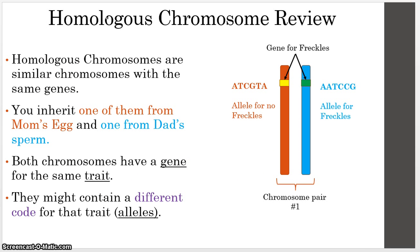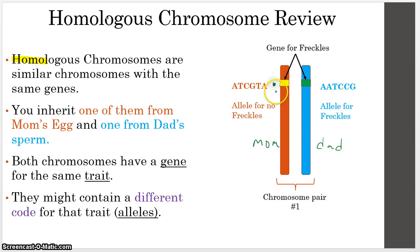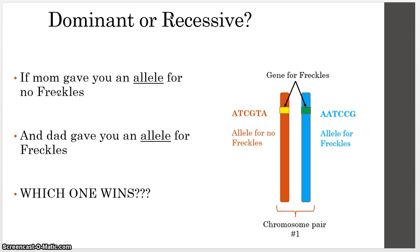Another concept to review is homologous chromosomes. Remember, the prefix 'homo' means same. These chromosomes are very similar — they have the same length and the exact same genes on them. You got one from mom and one from dad. So if we're interested in freckles, mom gave you one gene for freckles and dad gave you a gene for freckles also. We need to figure out which one wins. For example, if mom gave you the allele for no freckles and dad gave you the allele to have freckles — which one of those alleles is actually going to show up in you?